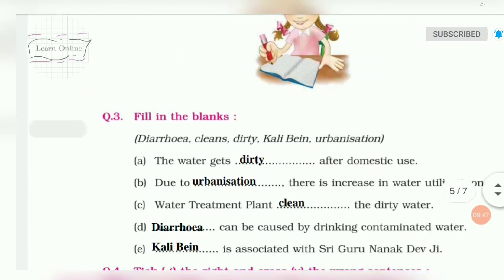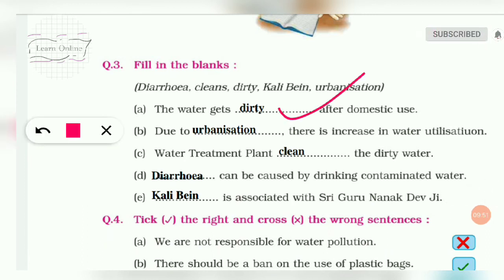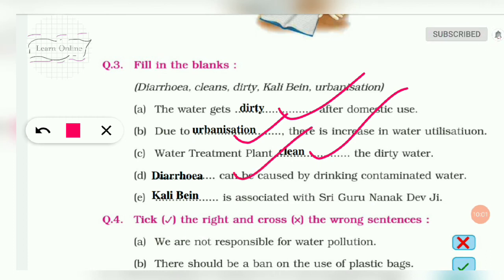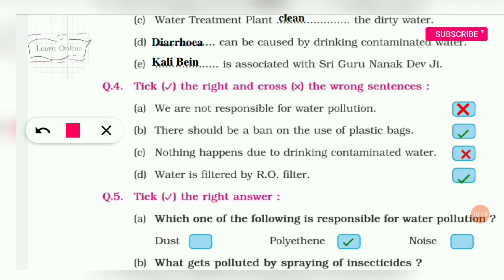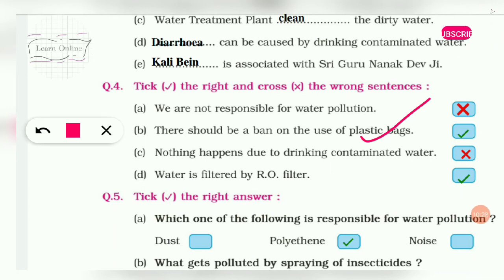Fill in the blanks: Water gets dirty after domestic use. Due to urbanization there is an increase in water utilization. Water treatment plants clean dirty water. Diarrhea is caused by drinking dirty water. Kali Bein is associated with Sri Guru Nanak Dev Ji. True/False: We are not responsible for water pollution — False, human beings are responsible. There should be a ban on plastic — True. Nothing happens from drinking contaminated water — False.